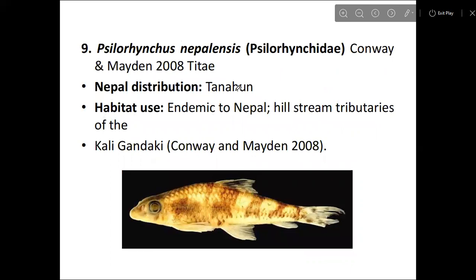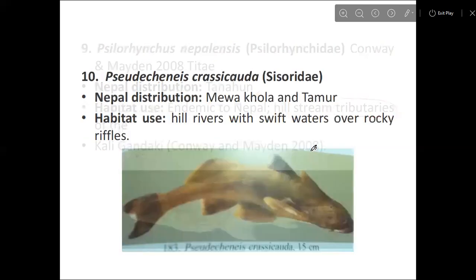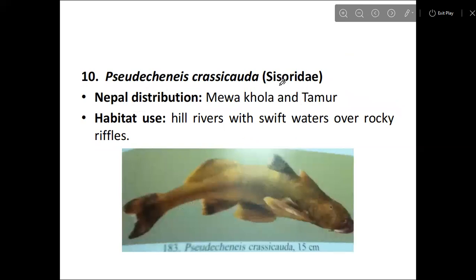The next species is Siluringus nepalensis from the Siluringus family. Its distribution in Nepal is basically in hill stream tributaries. The habitat consists of hill rivers with swift water over rocky substrate.